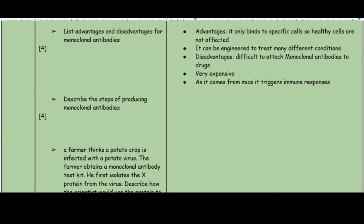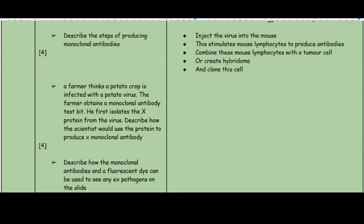Describe the steps to producing monoclonal antibodies. Inject the virus into a mouse — this stimulates the mouse's lymphocytes to produce antibodies. Then combine these lymphocytes with a tumor cell to create a hybridoma and clone the cell. A key point often lost: you are not taking out the antibodies from the mouse — you are extracting the lymphocytes (the cells that produce antibodies) and combining those with a tumor cell.